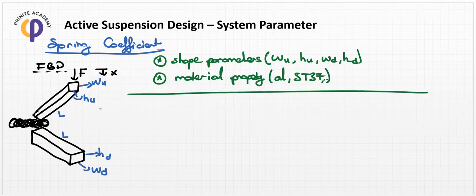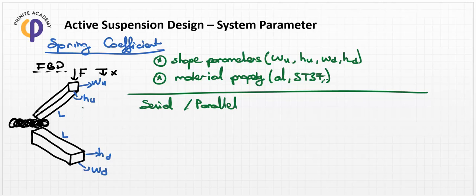In the second place, we should determine whether these spring elements are in a series or parallel connection, because a parallel connection has different properties and requires a different approach to calculate the correct spring coefficient factors. So we must determine whether a serial or parallel connection is included.